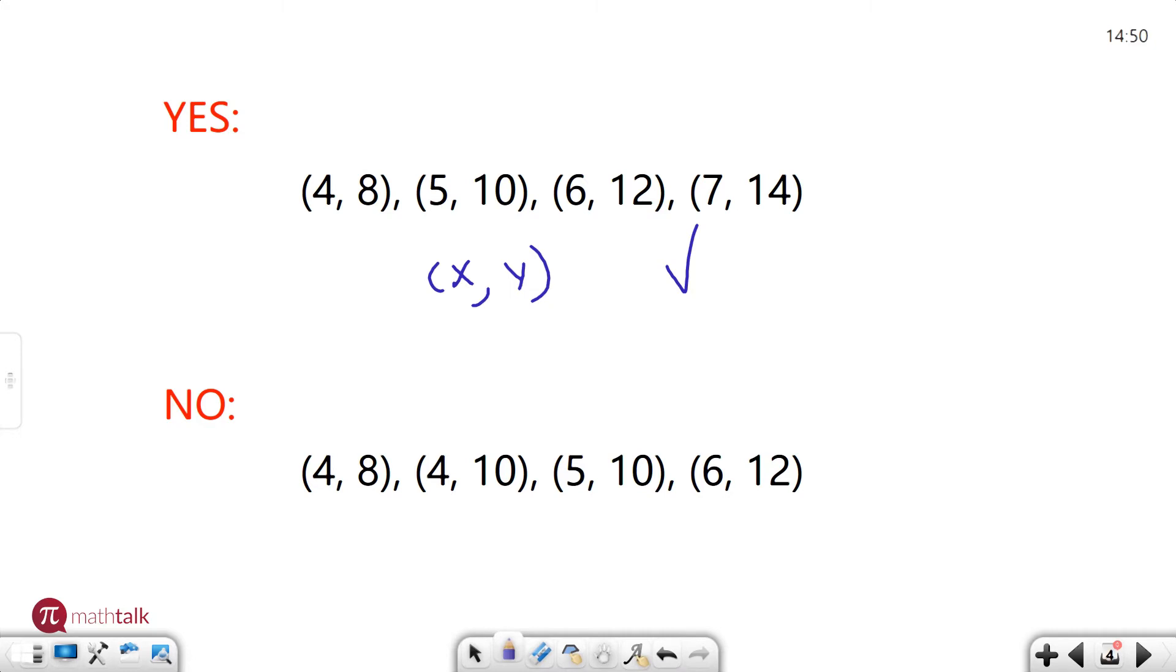If you look at the second set of ordered pairs, you have the x values are 4, 4 again, 5, and 6. So if you look for x values that repeat, you have 4 and 4. Since 4 shows up more than once, this is not a function.